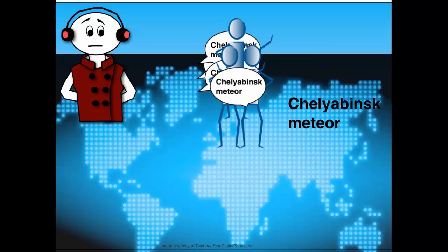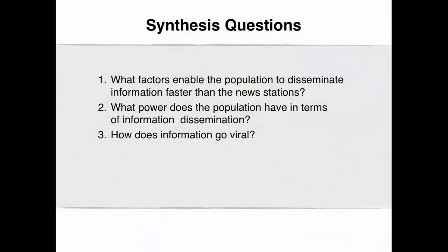In the light of this event and many more, we can safely state that digital communication technologies completely changed the structure of information dissemination. The synthesis questions for this video clip are as follows: What factors enable the population to disseminate information faster than the news station? What power does the population have in terms of information dissemination? And finally, how does information go viral?